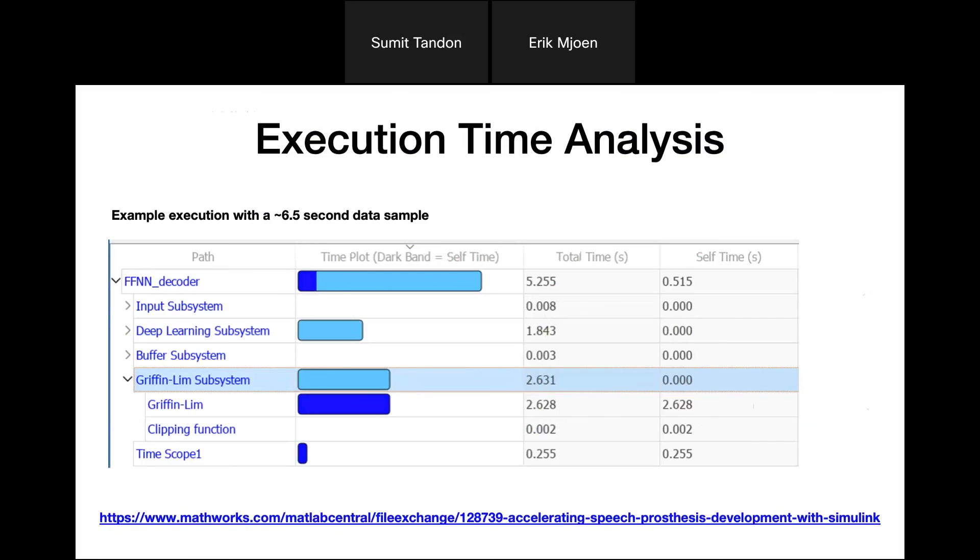For example, Griffin-Lim is a long-standing standard for spectrogram inversion, but there are newer machine learning-based techniques like HiFi-GAN that we could swap in as well. But we also have to contend with these timing tradeoffs. So these tools allow us to investigate. If you want to check out the model, we have it up on MATLAB Central.